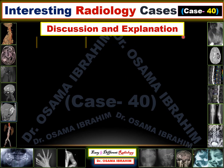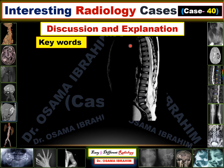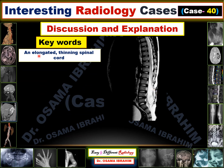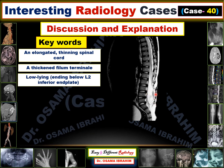Discussion and explanations. The keywords for this case: sagittal T2-weighted MRI imaging showing the cord in an abnormal position. There is elongation and thinning of the spinal cord with thickening of the filum terminale. The low-lying spinal cord appears at the level of L2 inferior vertebral body, which is not normal because the normal position is at the level of D12-L1.